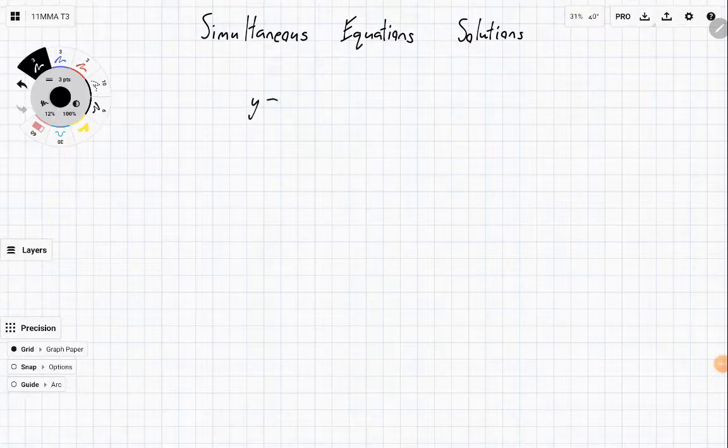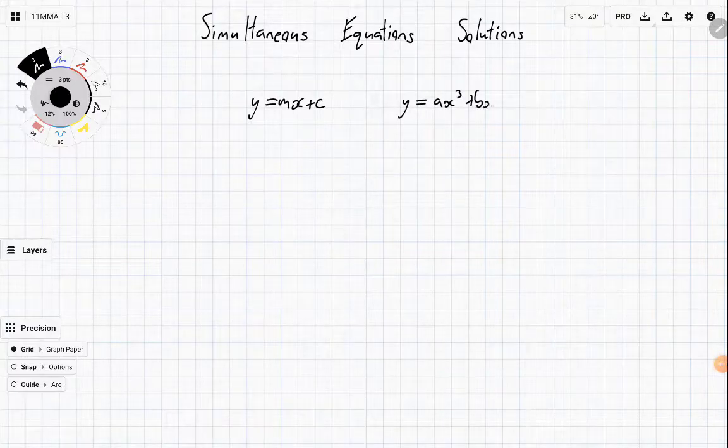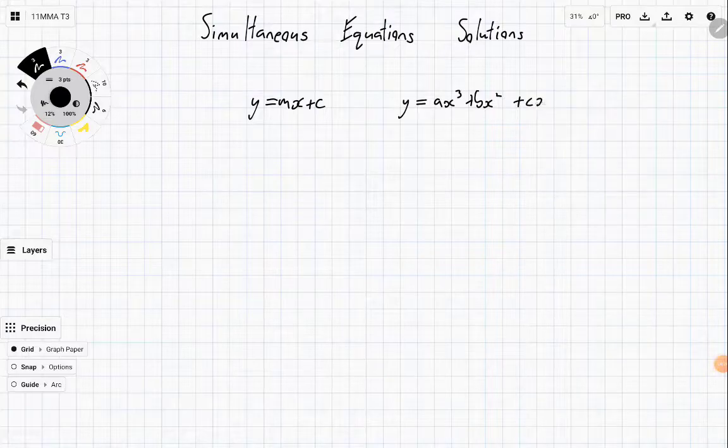if I have some line y equals mx plus c and let's say I've got some kind of cubic ax to the 3 plus bx squared plus cx plus d, the question is when do these two hit? How many times do they hit? Basically what's it going to look like? So let's do some test cases.